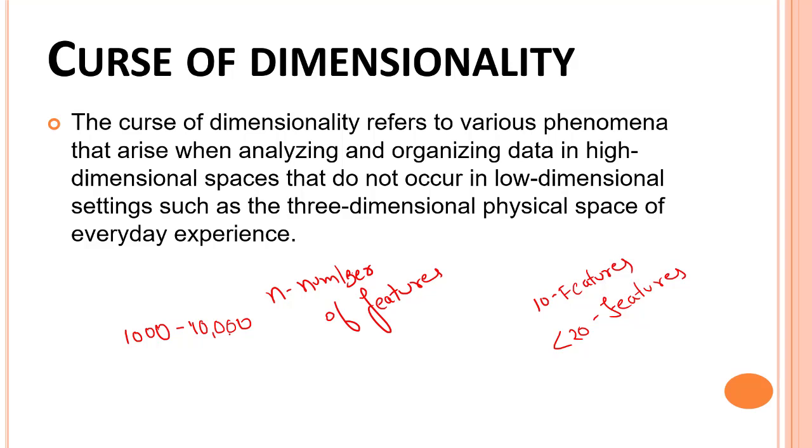So we need a way to reduce the dimensions. Let's say you have four dimensions and you want to change it to one, or three dimensions you want to change to maybe two or less. We have these algorithms known as PCA—Principal Component Analysis—LDA, and others. Let's look into what we mean by PCA.